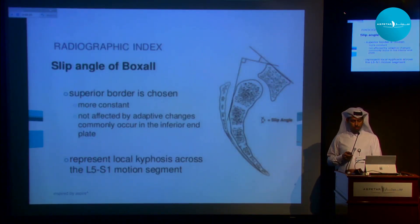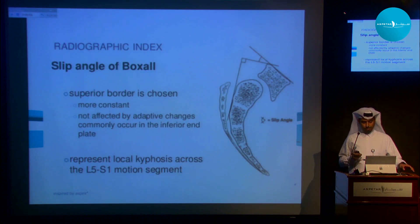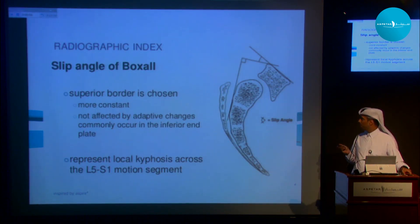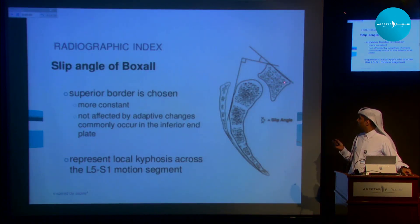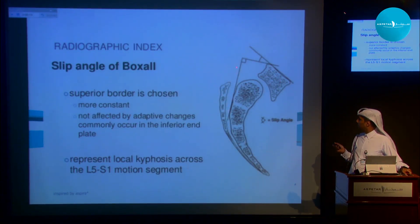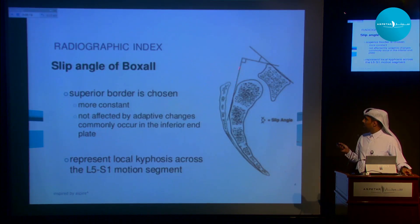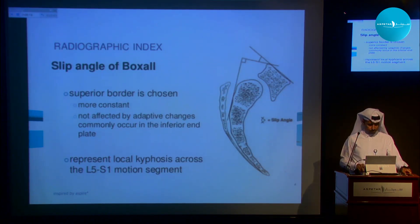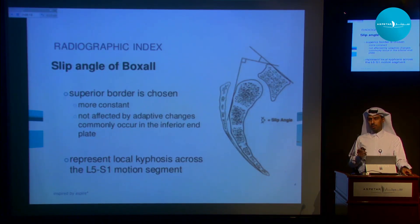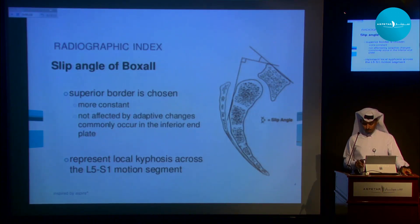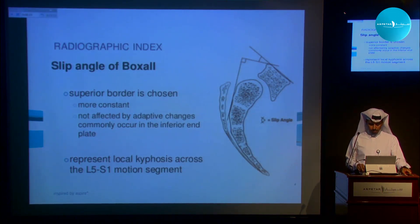There is a way to measure the slip angle: take a line across the superior end plate and a line at the posterior border of the body of the sacrum, and you measure this angle. It represents a local kyphosis at the L5-S1 motion segment.